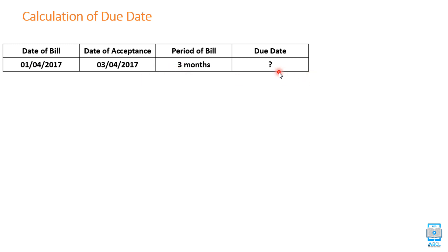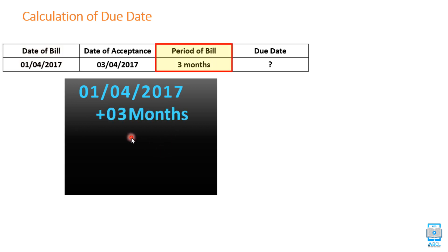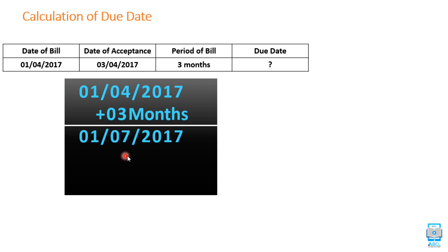Now, the first question is: calculation of due date will start from which date — date of bill or date of acceptance? Remember, if the question doesn't specify anything, we will start from date of bill. So, we write date of bill which is 1st April 2017, and we add the period of 3 months, which gives us 1st July 2017.